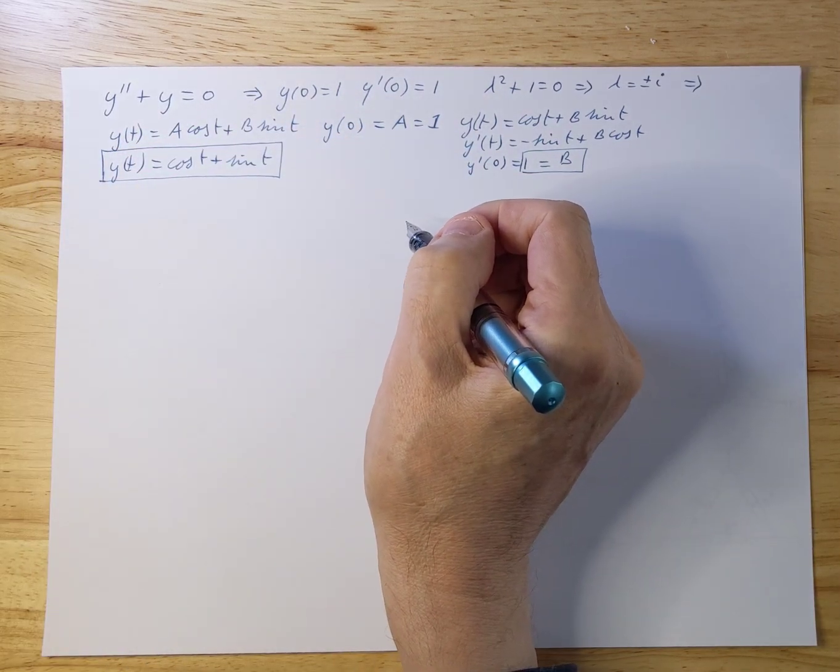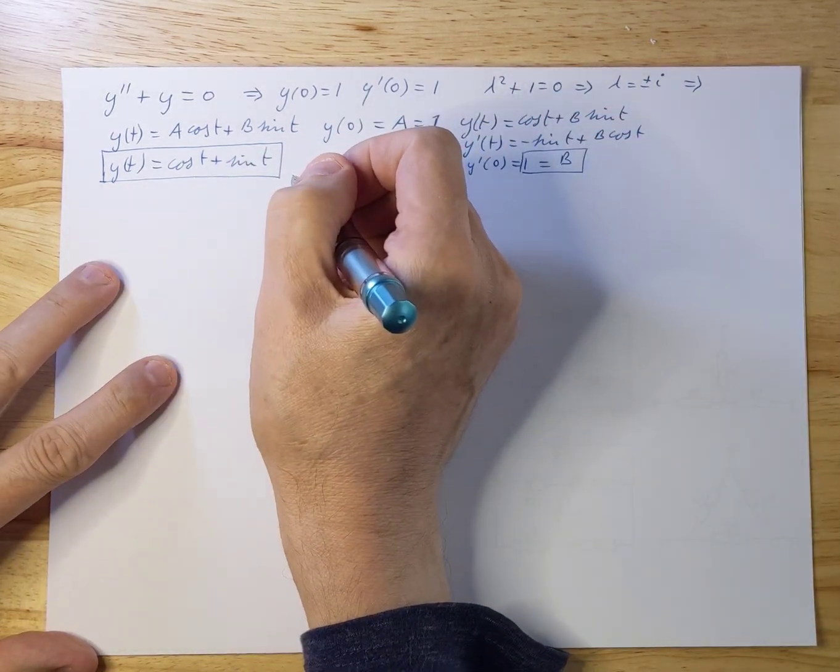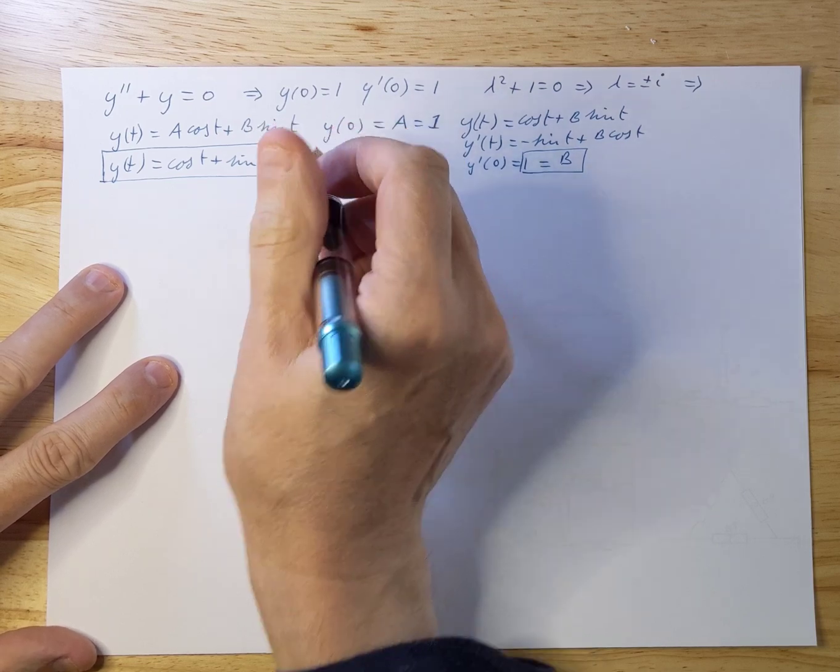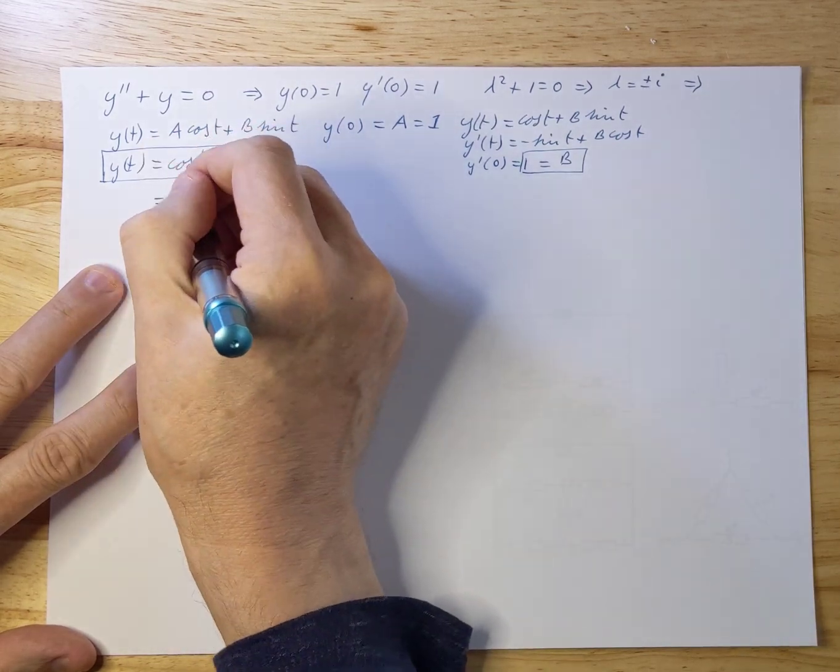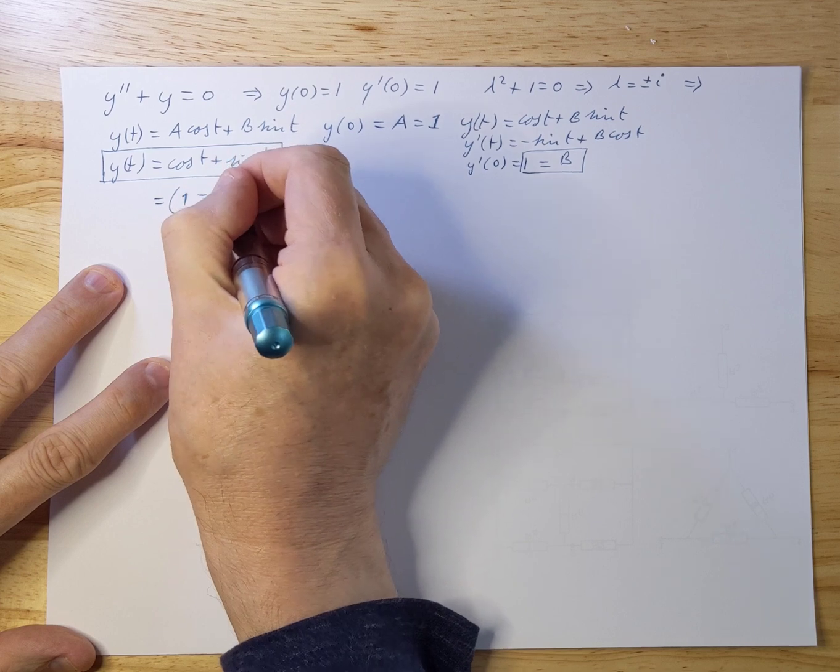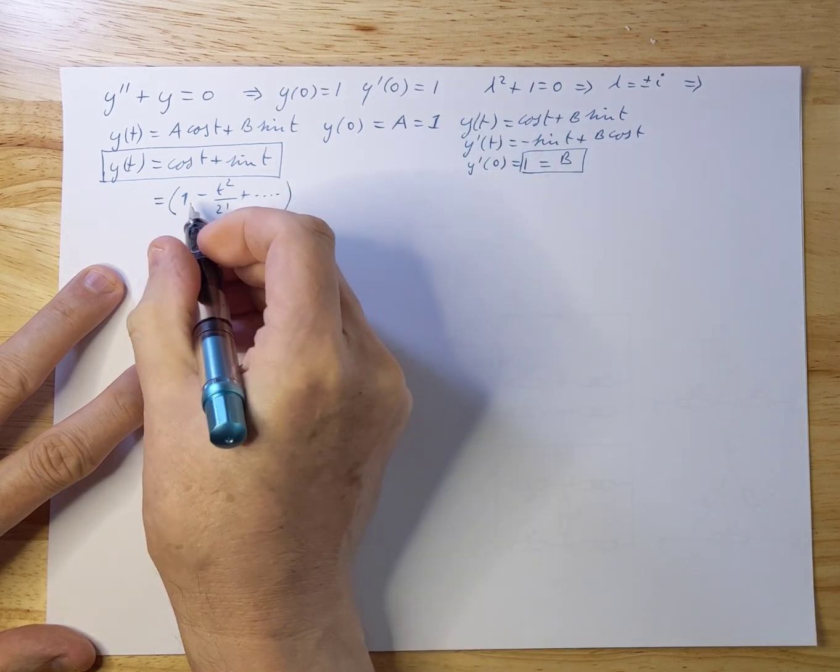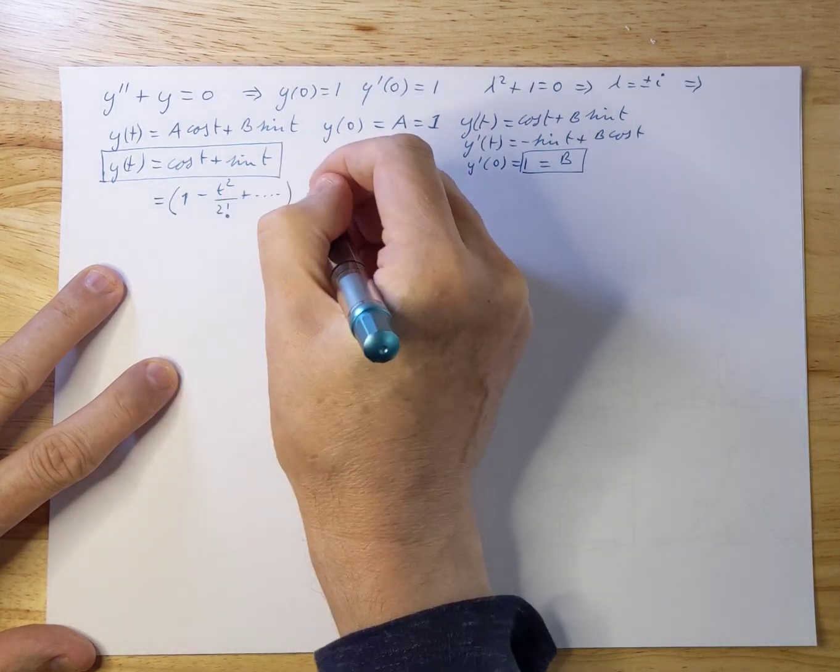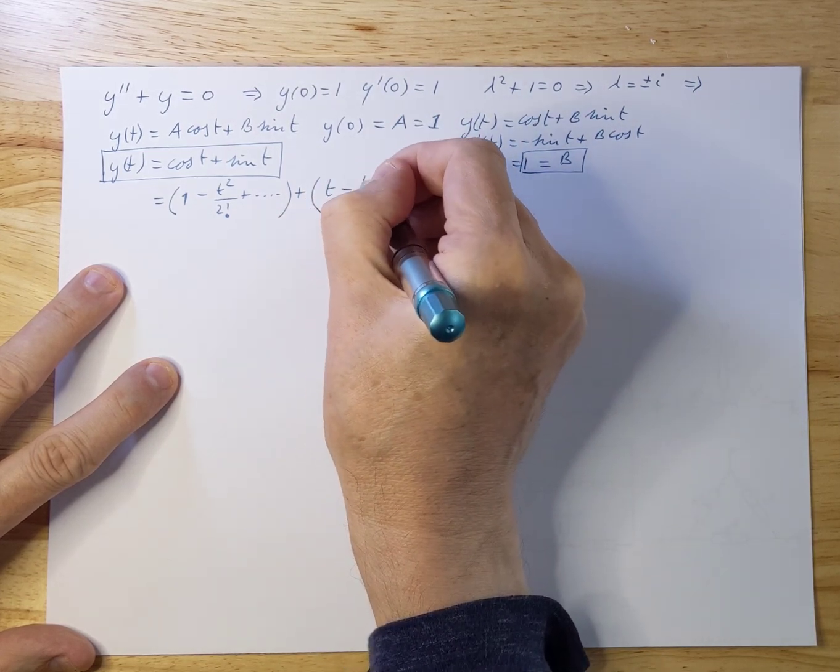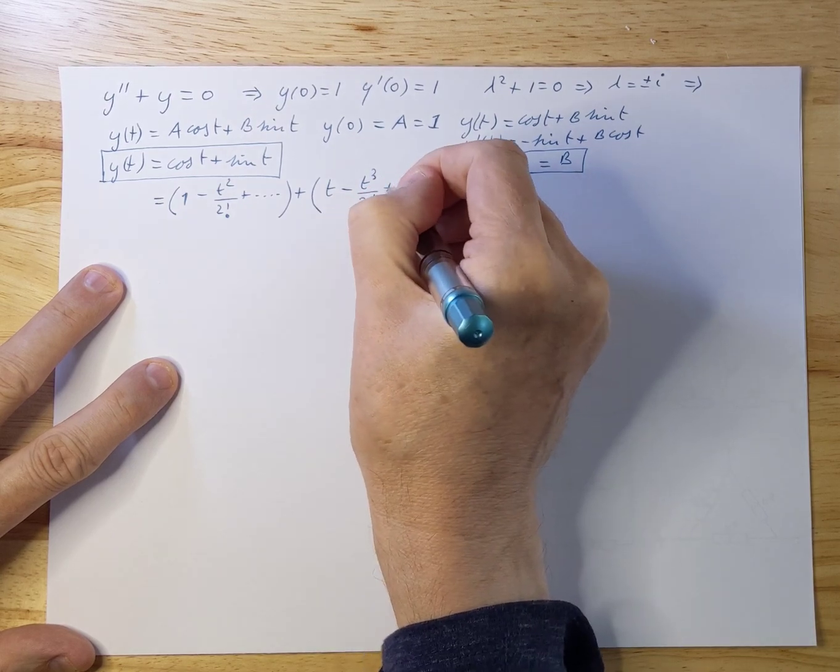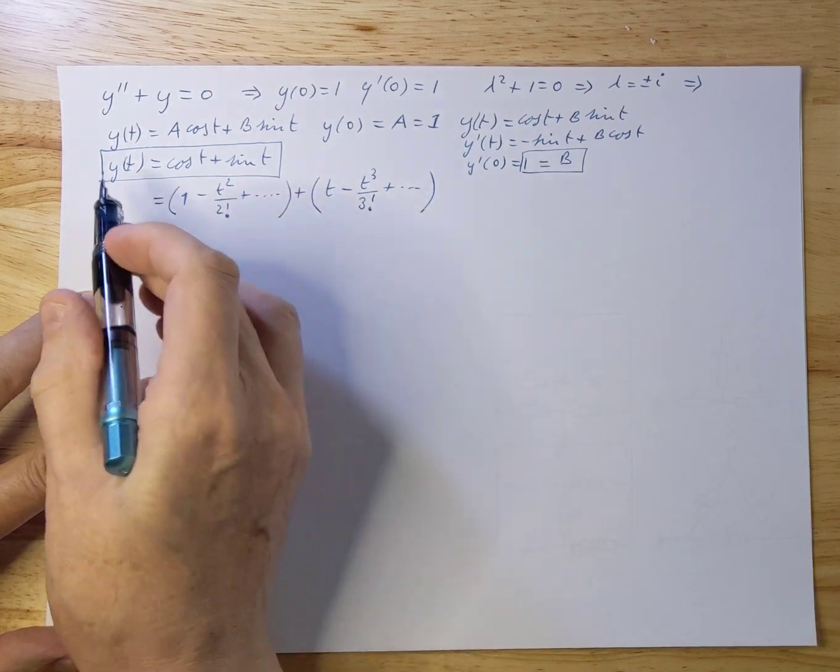Now if you do perturbation theory, what you will get is you will never get an exact result. You get a series that tends toward that result. So if you do Taylor expansion, for instance, around 0 of this solution, what you will get is the following. You get 1 minus t squared over 2 factorial, etc., right? So these are the first two terms. Those are the terms I'm going to reproduce with my perturbation theory. And for the sine part, it's t minus t³ over 3 factorial, etc. So these are the terms we expect to get if we do perturbation theory.